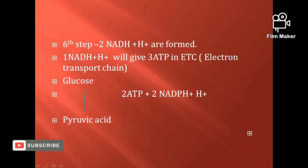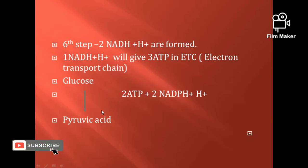In the sixth step, 2 NADH+H+ are formed. Each NADH+H+ produces 3 ATP molecules through the electron transport chain, so 2 NADH+H+ produces 6 ATP in total.